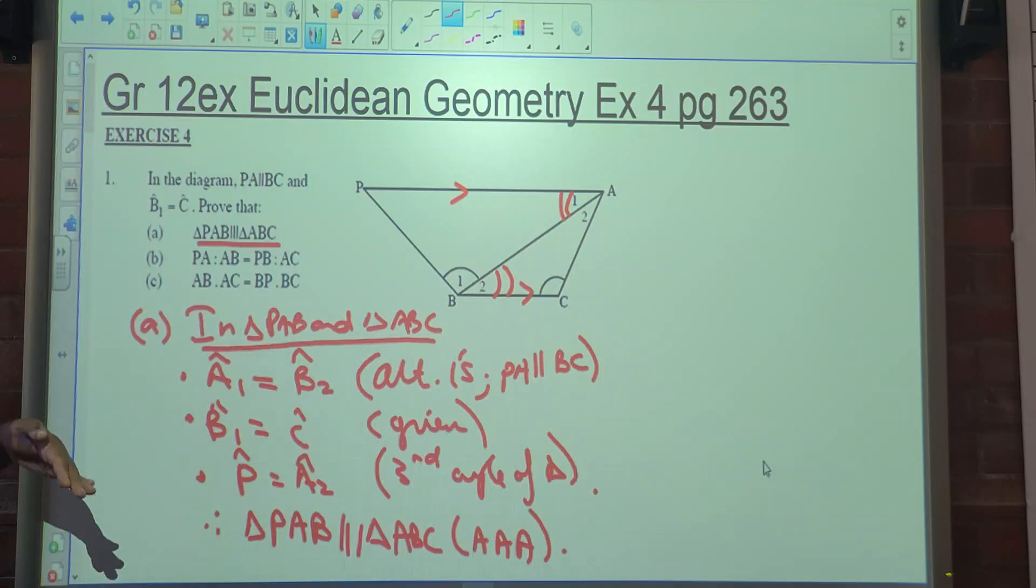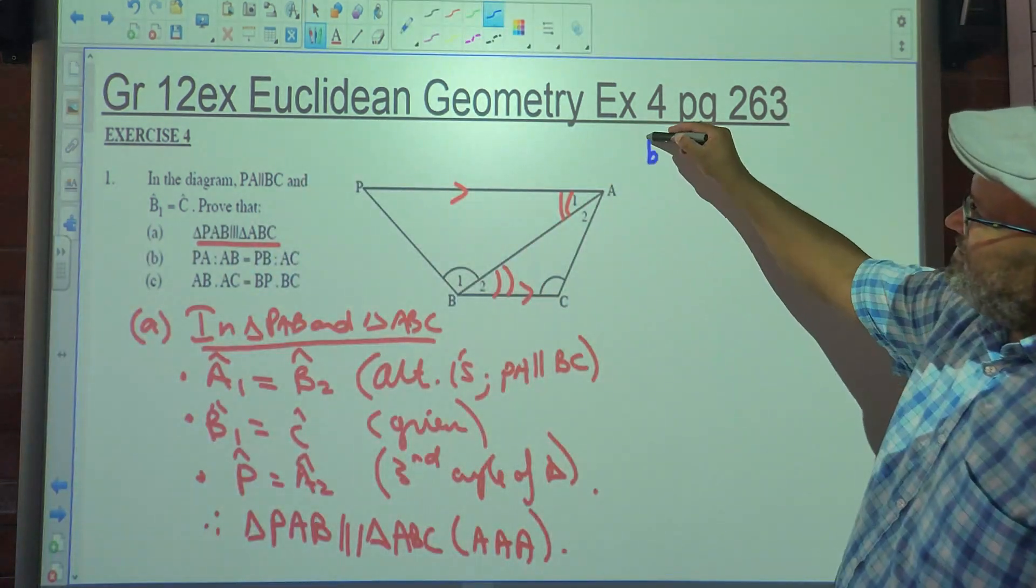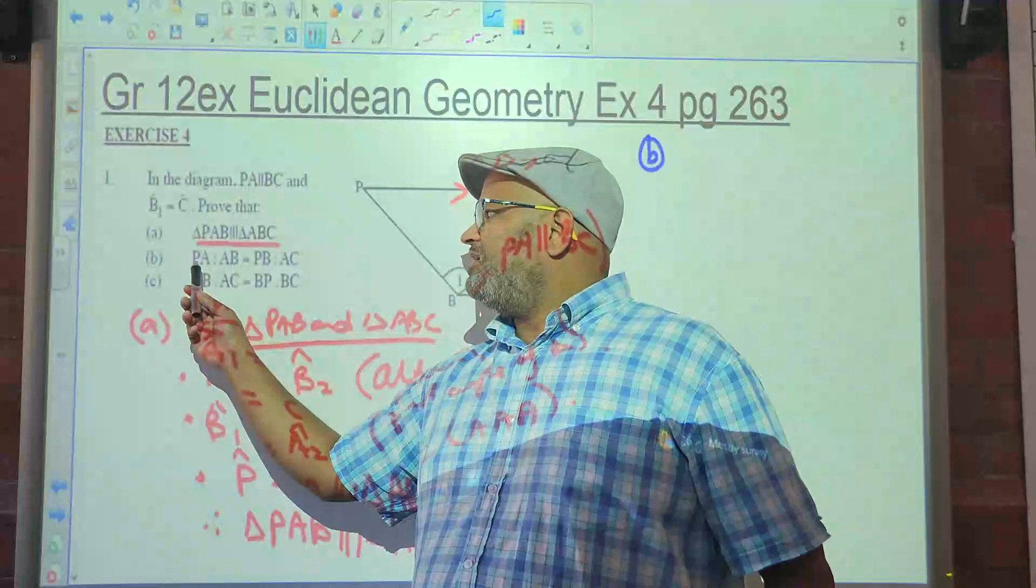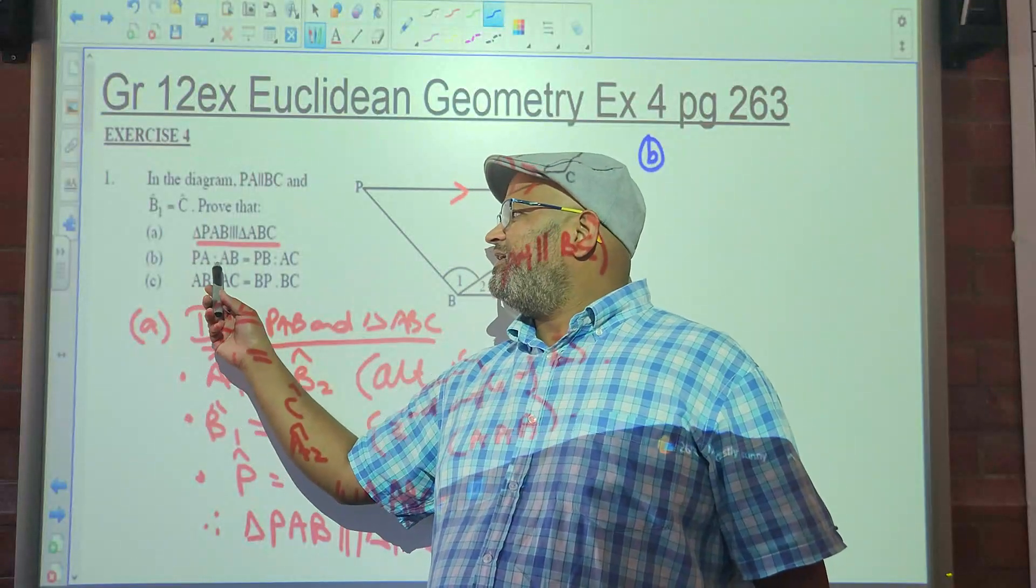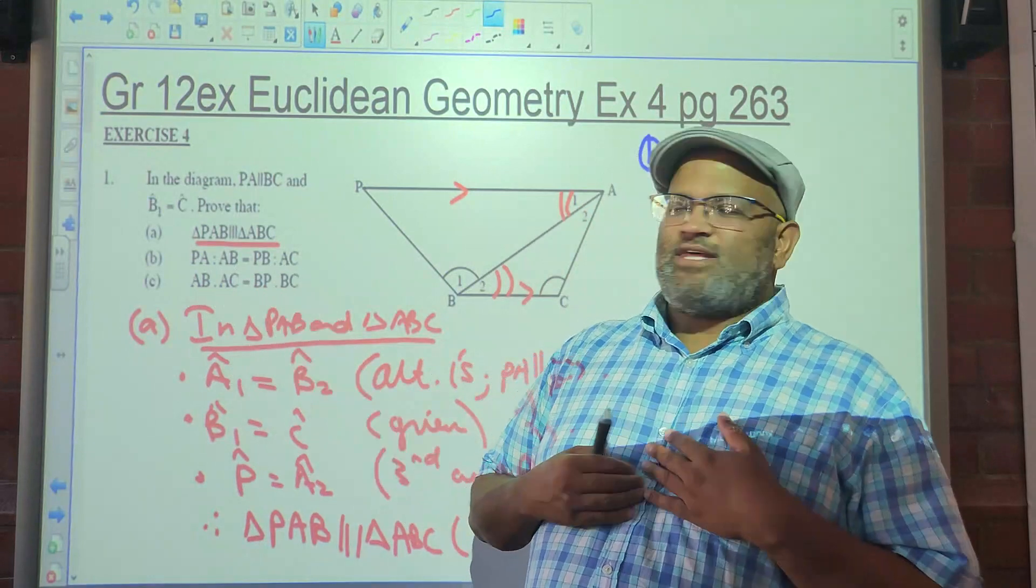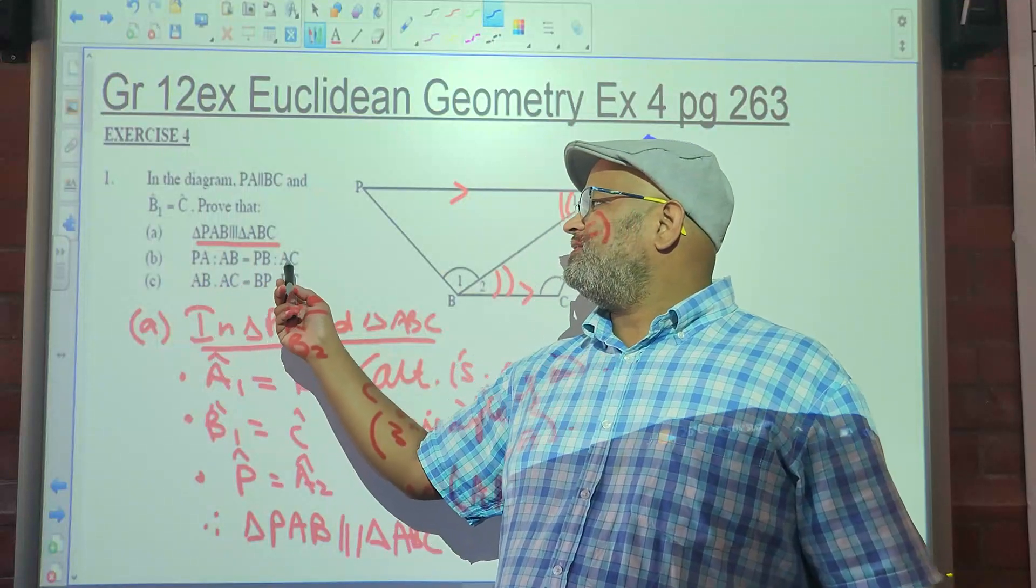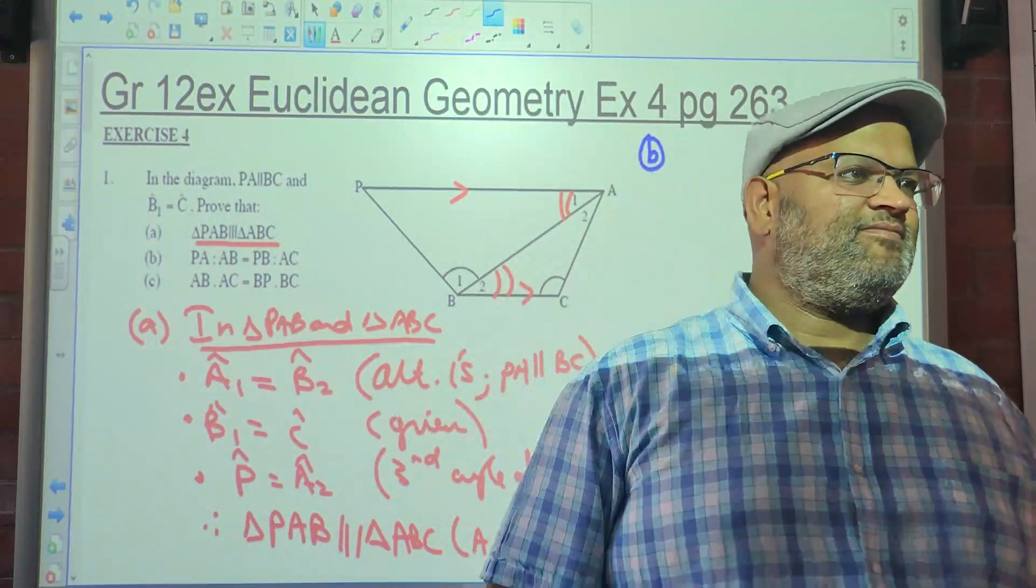What will almost definitely follow a similarity question? A ratio question, not so. You can see it's evident in B. B says must prove that AB times AP is to AB as PB is to AC. To us or to me, that would be PA over AB is equal to PB over AC.